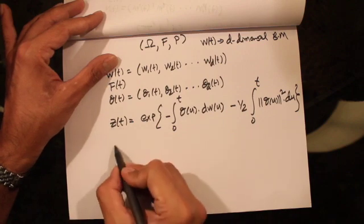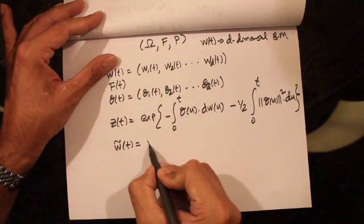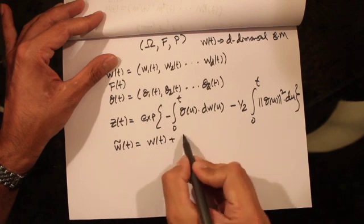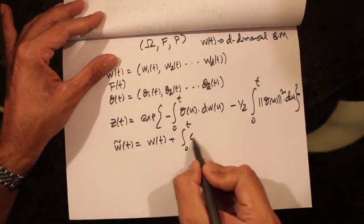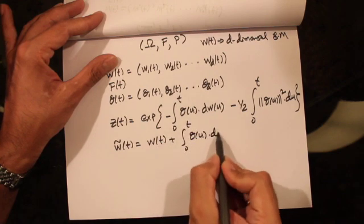Let's also define another process W-tilde(t), which is nothing but W(t) plus the integral from 0 to t of theta(u) du.